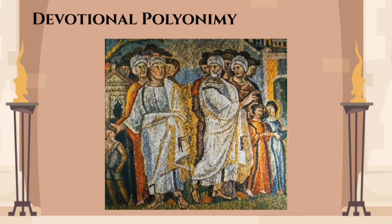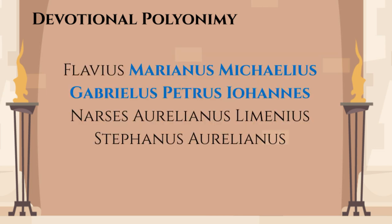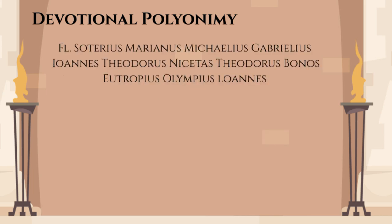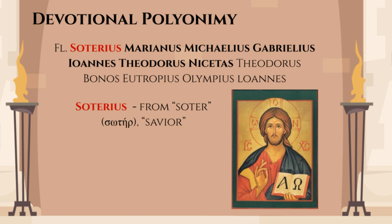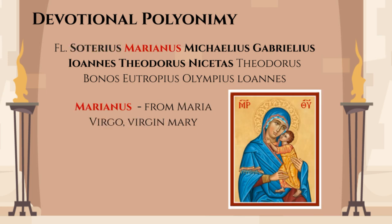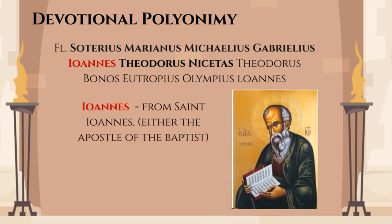Christian trends also found their way into aristocratic polyonomy. From around 500 AD, we start seeing the so-called devotional cognomina. Roman nobility, both in the East and in the West, started to add the names of archangels, apostles, and saints to their own. One such example is Flavius Marianus Michaelius Gabrielus Petrus Johannes Narcis Aurelianus Limenius Stephanus Aurelianus. The devotional part had to come before the secular name, and the names within it were arranged in order of theological precedence: the aspects of divinity before the Holy Virgin, the Virgin before the Archangels, the Archangels before the Apostles, and the Apostles before ordinary saints and martyrs.